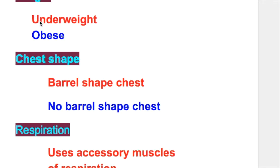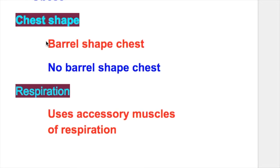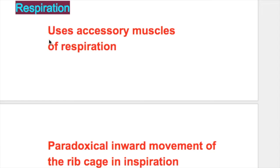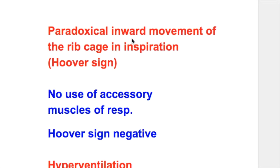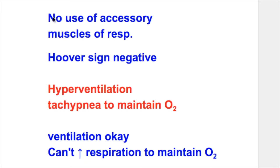Weight: Emphysema patients are underweight, whereas chronic bronchitis patients are obese. Chest shape in emphysema is barrel-shaped, whereas in chronic bronchitis it is not barrel-shaped. Emphysema patients use accessory muscles of respiration and have paradoxical inward movement of the ribcage on inspiration, known as Hoover's sign, which is negative in chronic bronchitis. In emphysema there is hyperventilation and tachypnea to maintain oxygen, whereas in chronic bronchitis ventilation cannot increase sufficiently to maintain oxygen.